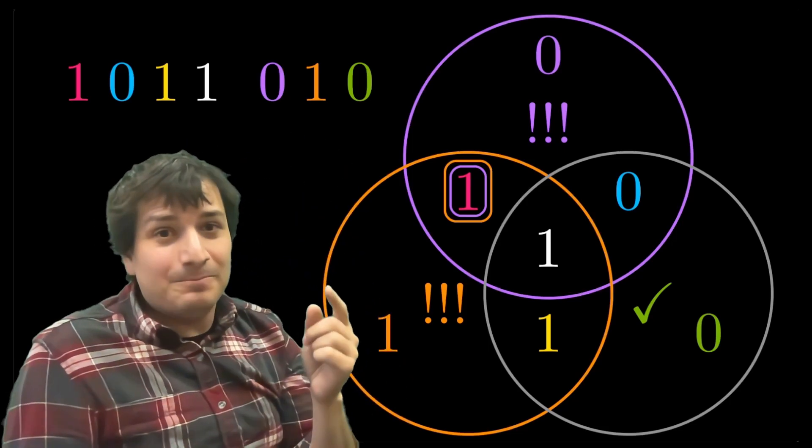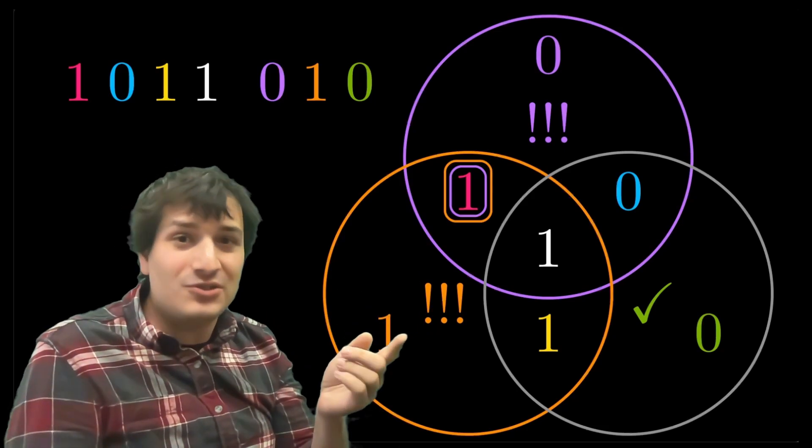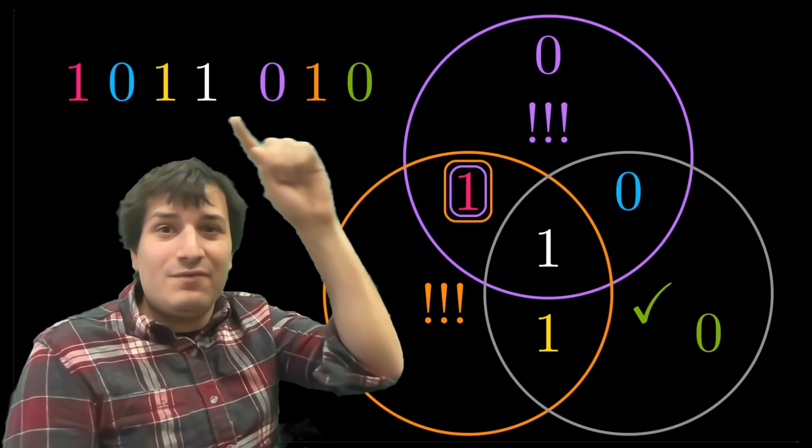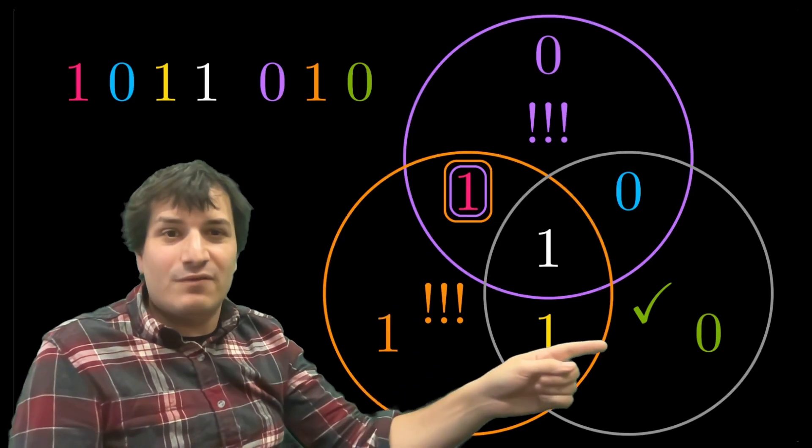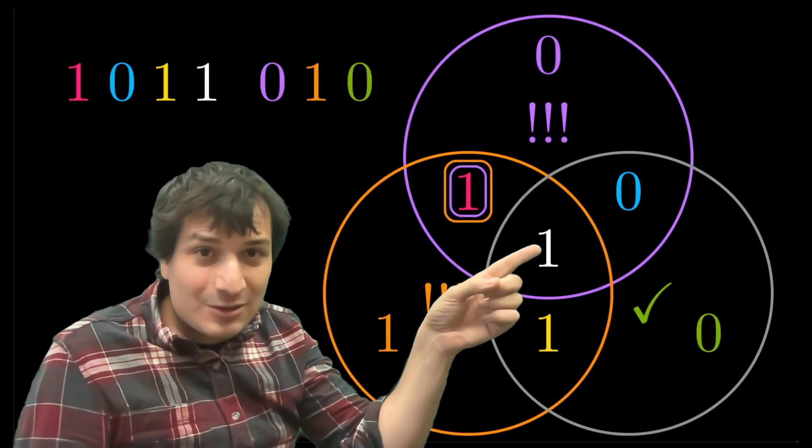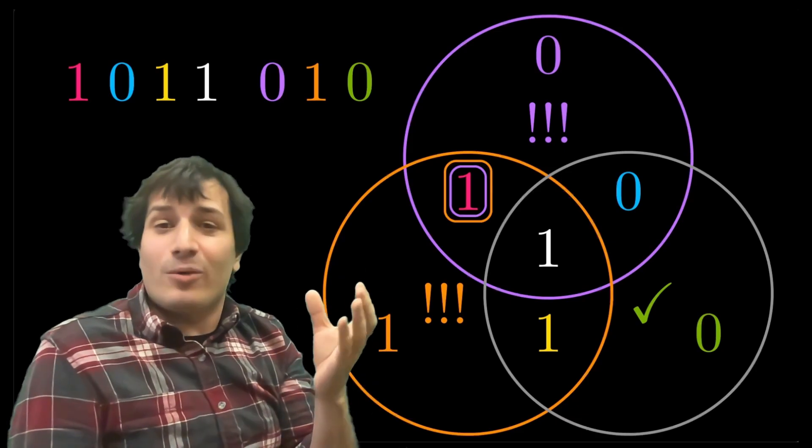So he found the error and fixed it. And this whole scheme with the circles, it will find and correct any one single error. So if any of these bits are flipped, by looking at the intersection of these three circles, it's either in one circle or two circles, or all three circles, that would be the middle bit. And Bob can find and correct the error.